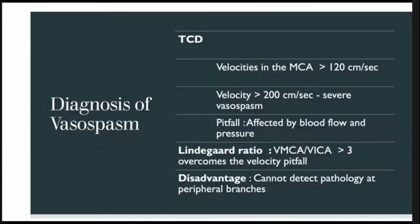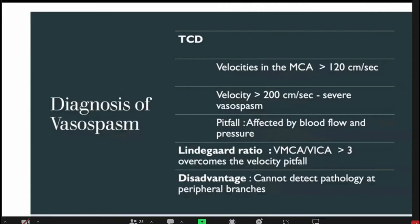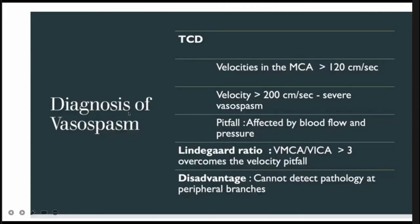Transcranial Doppler has emerged as a forward monitoring tool for detecting vasospasm early. Velocity in the middle cerebral artery greater than 120 cm/s denotes developing vasospasm, and velocities greater than 200 cm/s indicate severe vasospasm. However, these velocities can be influenced by pressure changes and blood flow. The Lindegaard ratio — velocity of MCA divided by ICA — greater than 3 denotes significant vasospasm. A disadvantage of TCD is that it cannot detect vasospasm in peripheral branches.